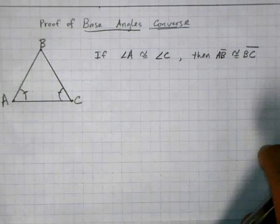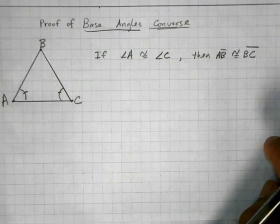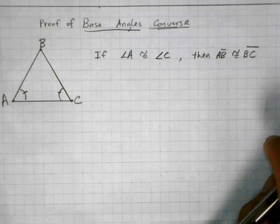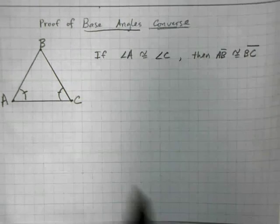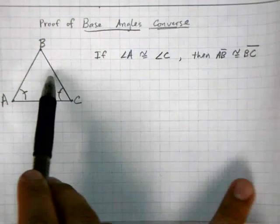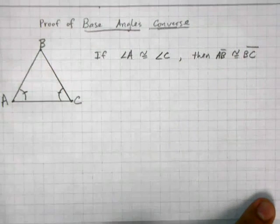Now, what we've seen before is a proof of the base angles theorem, which says that if I have an isosceles triangle, in other words, if AB is congruent to BC, then angles A and C are congruent to each other.